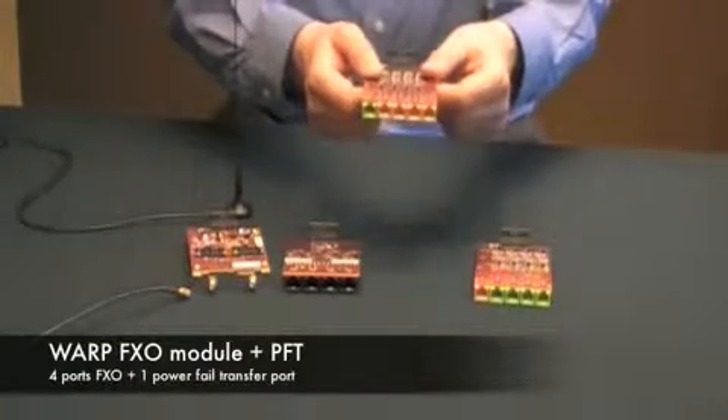The second module is an FXO expansion module. It can be identified by the four orange ports to which you'd plug in normal telephone lines from your local company. The green port is for PowerFail Transfer.